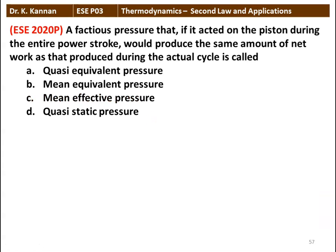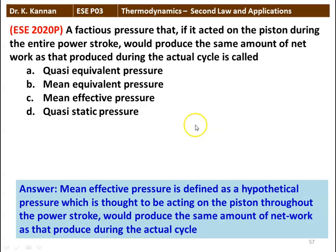The next question: A fictitious pressure that, if it acted on a piston during the entire power stroke, would produce the same amount of net work as that produced during the actual cycle is called quasi-equivalent pressure, mean-equivalent pressure, mean-effective pressure, or quasi-static pressure. The answer is mean-effective pressure. Mean-effective pressure is defined as the hypothetical pressure which, acting on the piston throughout the power stroke, would produce the same amount of net work as produced during the actual cycle. It is calculated as work done divided by the swept volume.